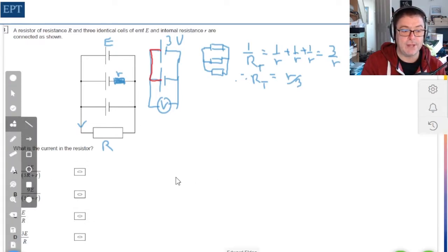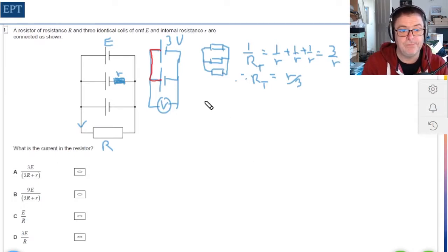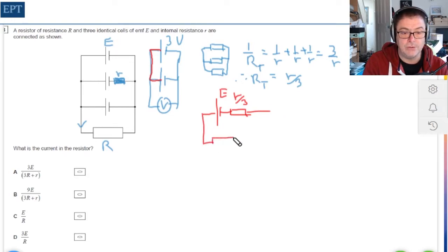So now let's redraw the circuit. Always a big fan of drawing circuits out when you simplify them. That gives us one cell with an internal resistance. The cell has an EMF of E, the internal resistance is r over three, and that's connected to a load which has a value of capital R.